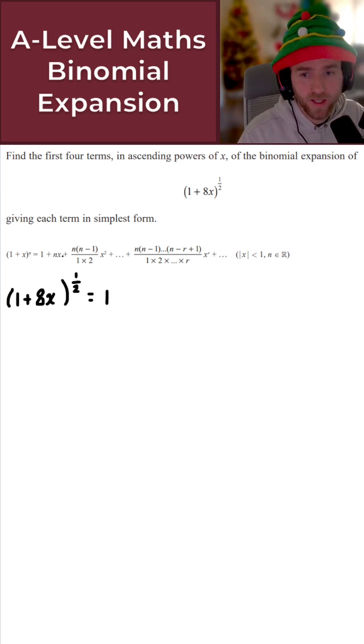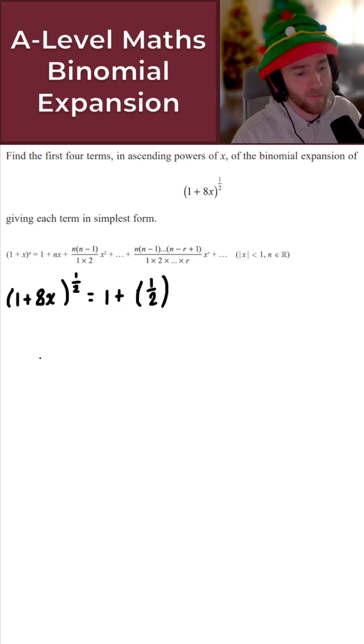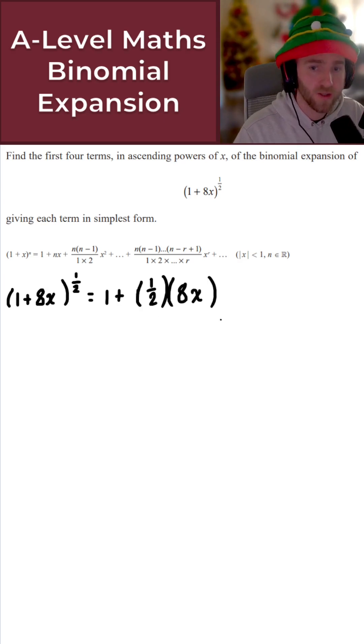Now for the next term, that is N times by X. So N here is our power, so that's a half. Plus, we've got 1 over 2 times by X. Now X in this case is 8X. So I've got a half times 8X. I'll come back to this and simplify this at the very end. So that's the second term.